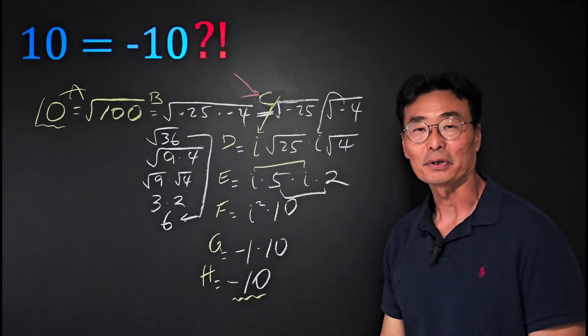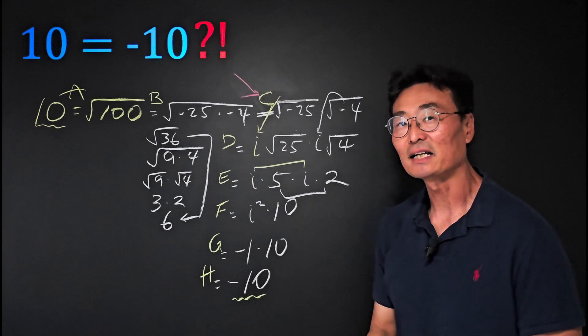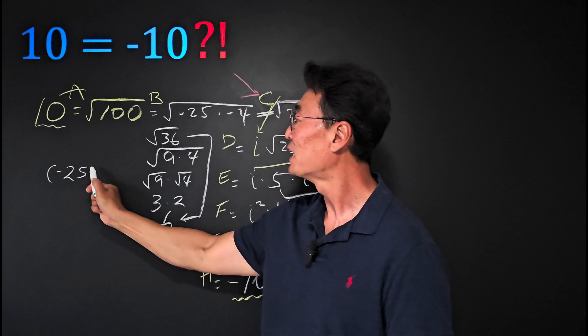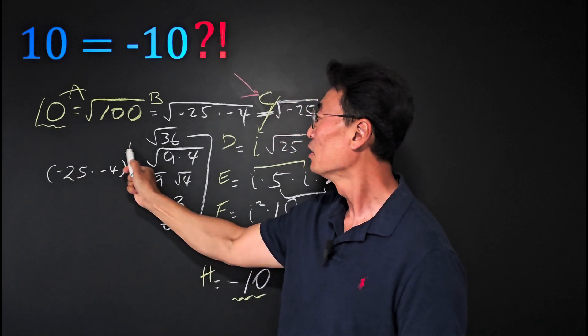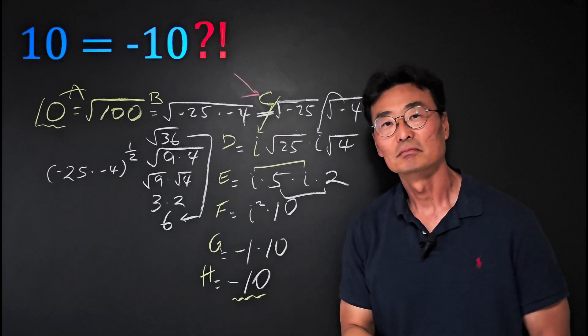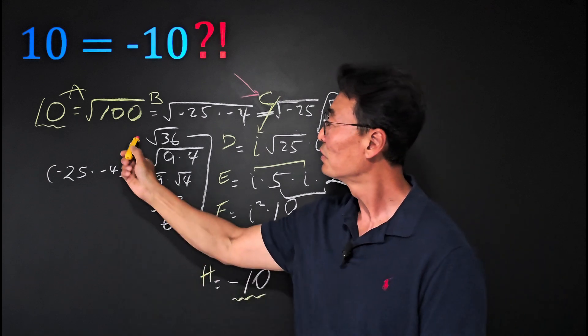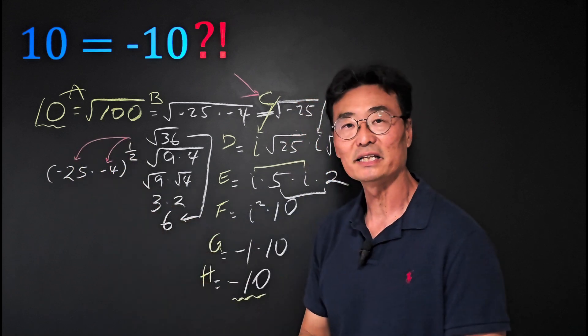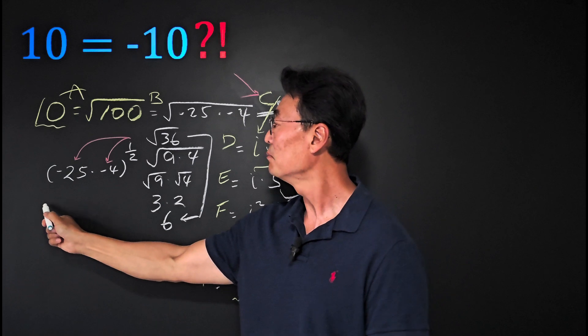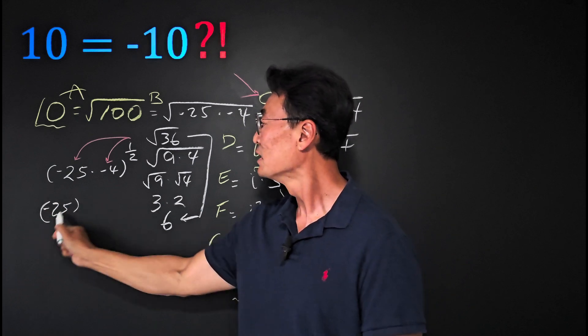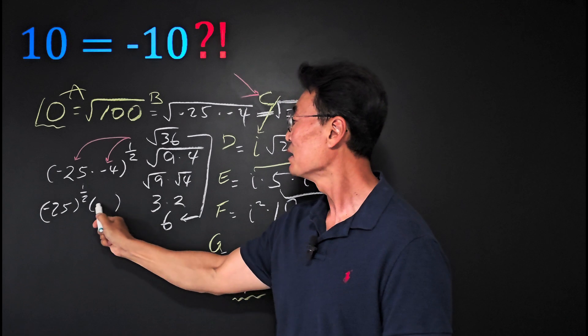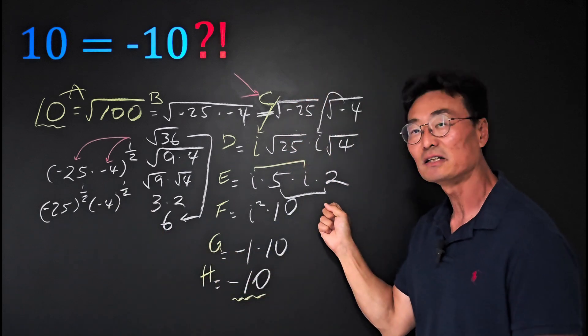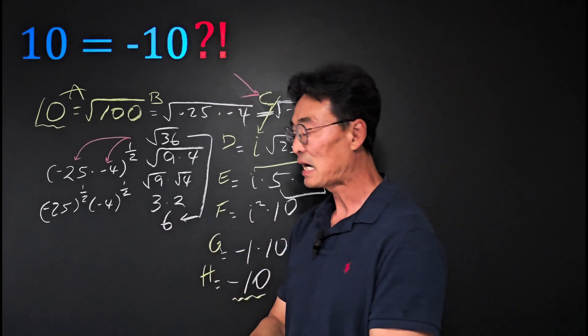If you're not clear on that, let me show you a different way. What if you have negative 25 times negative 4, all to the half power? If I take the half power and apply it to the negative 25 and the negative 4 separately, it would become negative 25 to the half power times negative 4 to the half power, which is the same thing as what I did here. With this, I would again end up with negative 10, which is what we don't want.